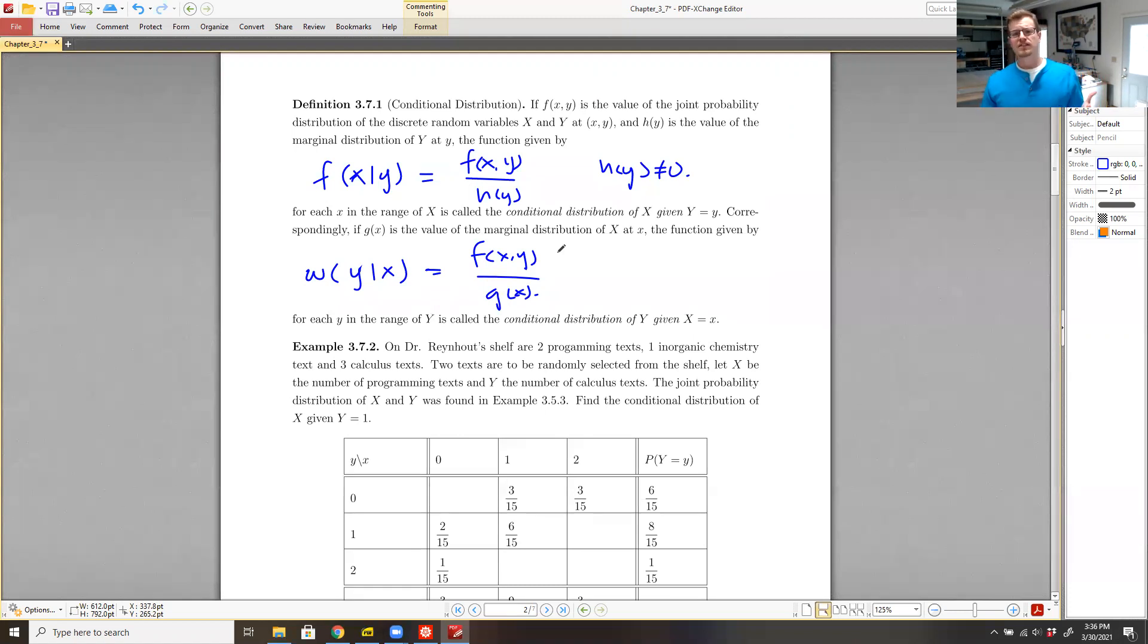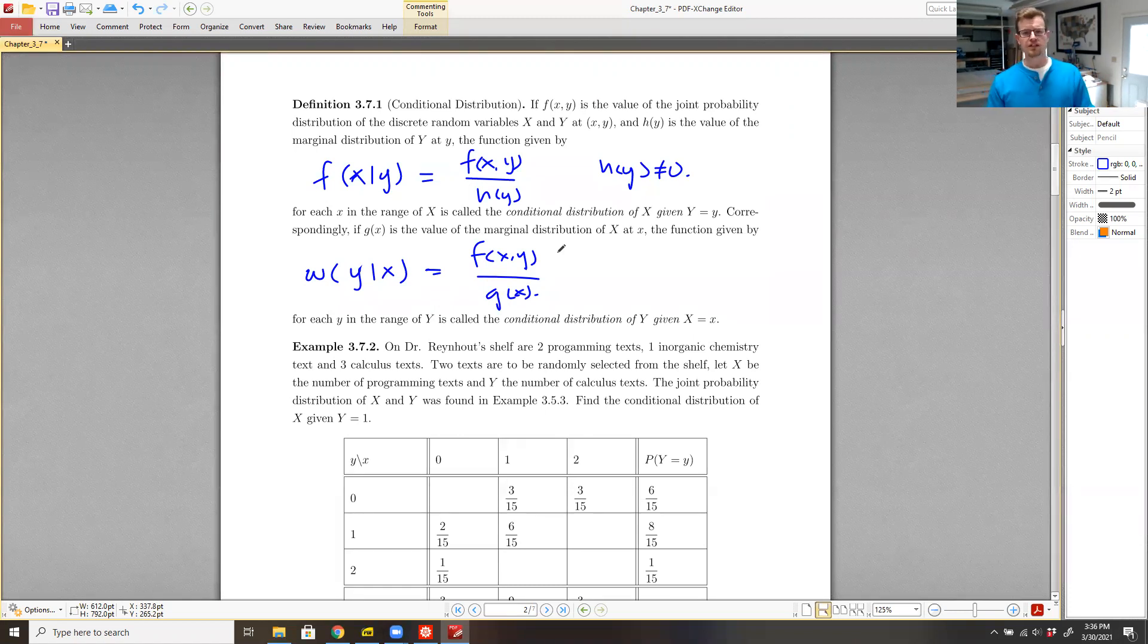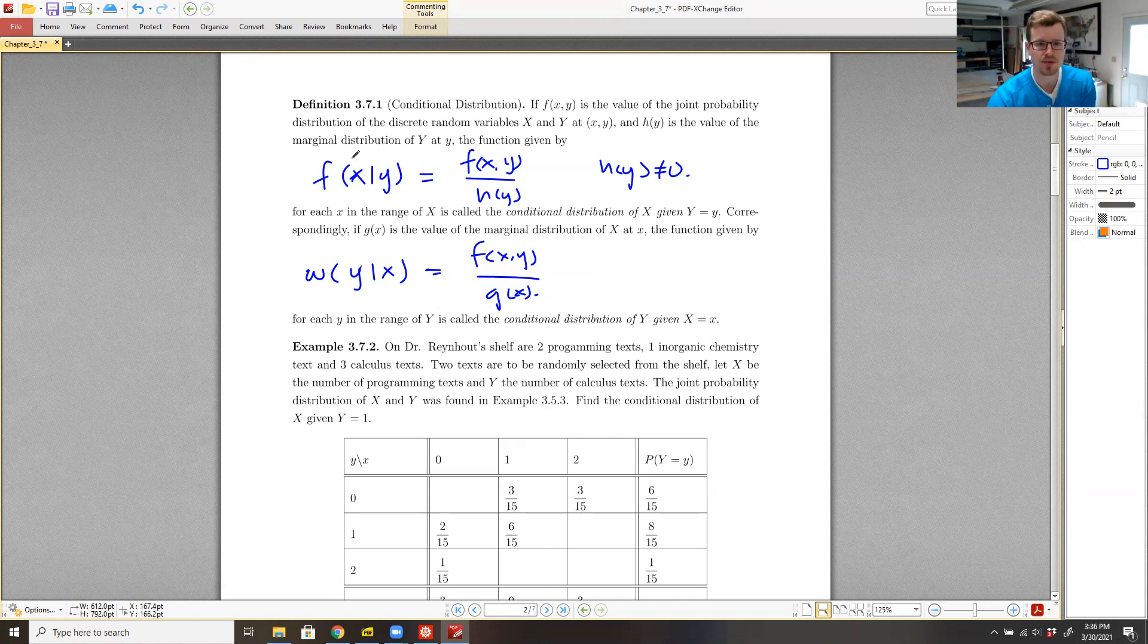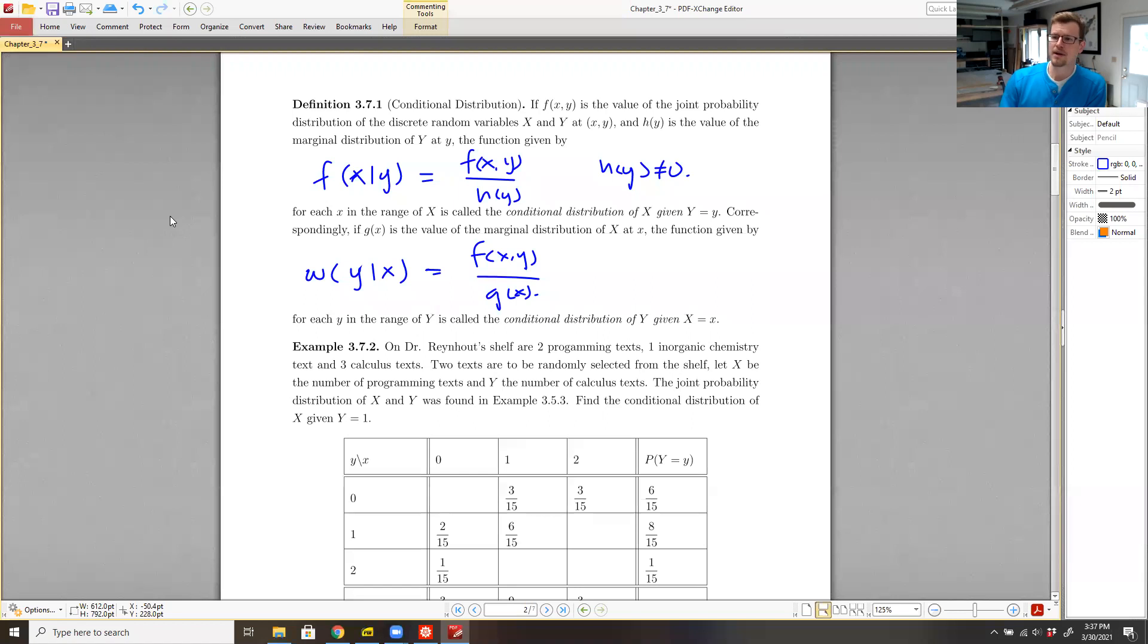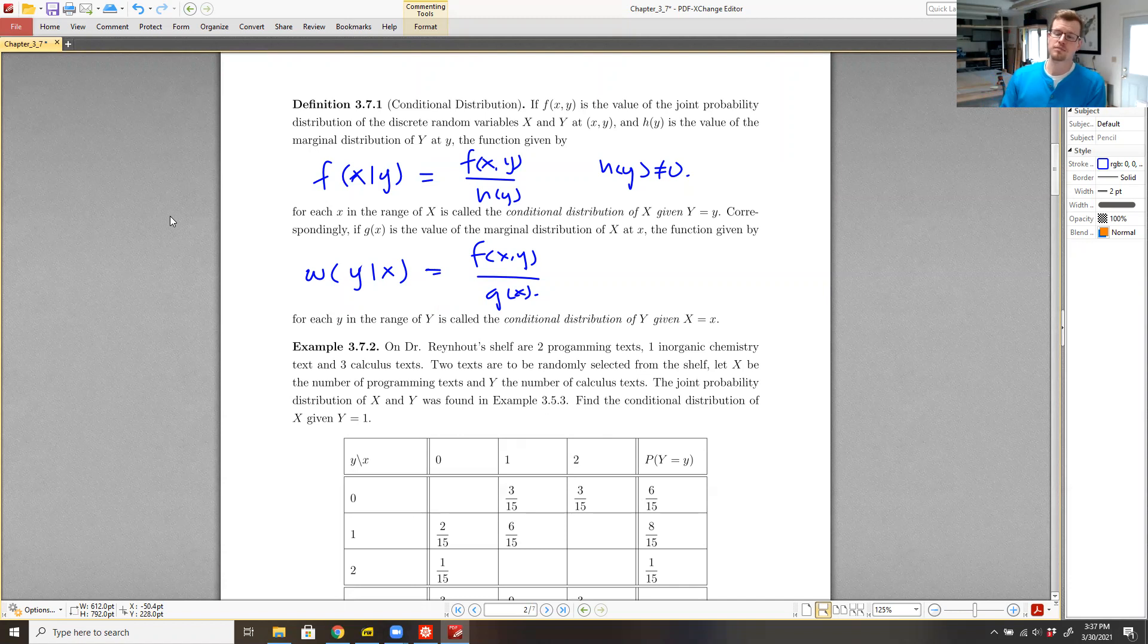So this matches essentially what our definition is of conditional probabilities, because when we evaluate this at specific values for x and specific values for y, what we end up with is the joint probability, that is the probability that both of these things occur, divided by the larger probability that the particular value of y is taken on, the marginal probability. So this is exactly the same thing as we have for the definition of conditional probability when it's evaluated at specific values.